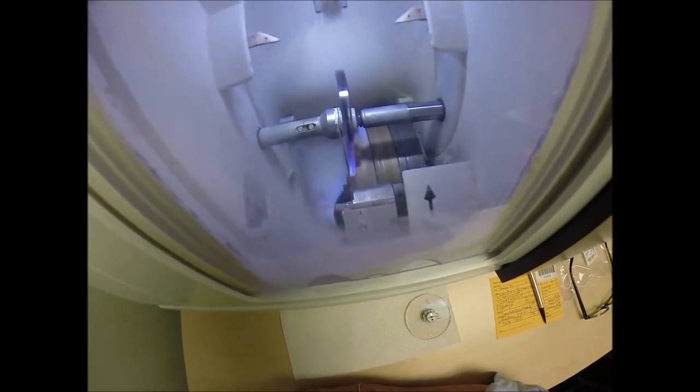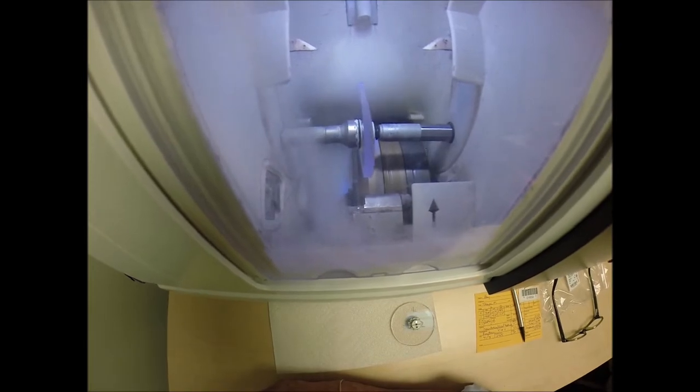Polycarbonate lenses cut dry, meaning that no water sprays onto the lens during the cutting cycle. Now plastic, high index plastic, and Trivex materials cut wet, meaning that water sprays onto the lens for the duration of the cutting cycle.